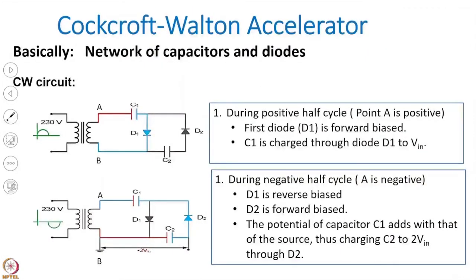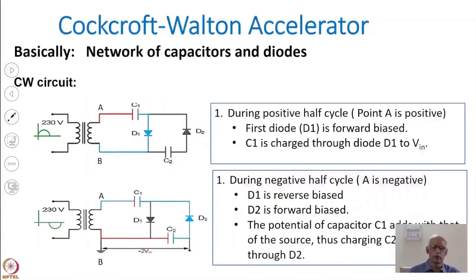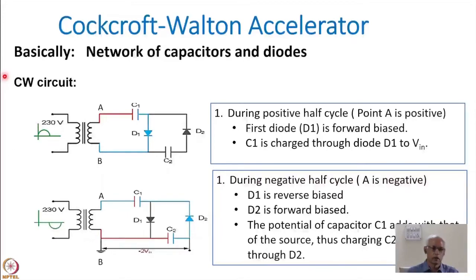Basically, it is a network of capacitors and diodes. Diodes are used because when using a DC voltage source you could use resistance, but here the voltage also goes negative. You cannot use resistance for charging the capacitor because the current would flow in reverse. With AC voltage, in one half cycle it charges and in the other half cycle it discharges, so you would not get any net voltage. That is why diodes are used — they function in forward bias and reverse bias.